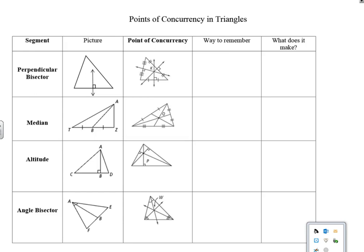We need to know that the perpendicular bisectors are going to intersect at a point that's called the circumcenter. So perpendicular forms a right angle, cuts it in half.